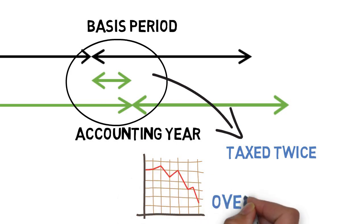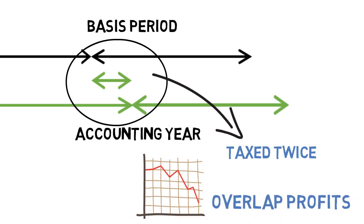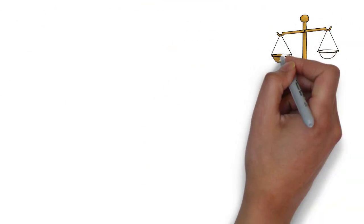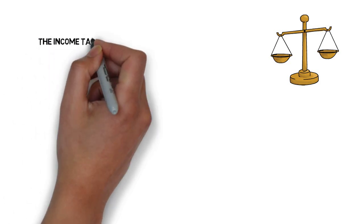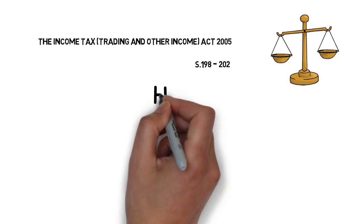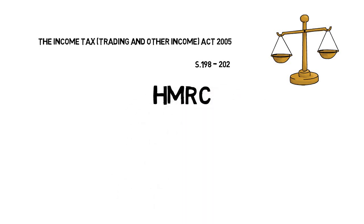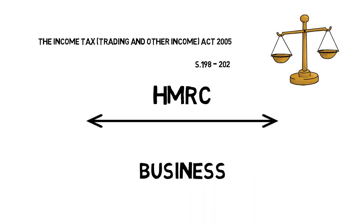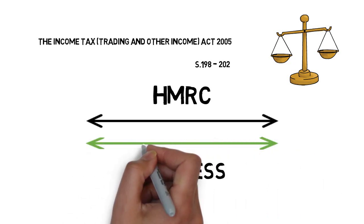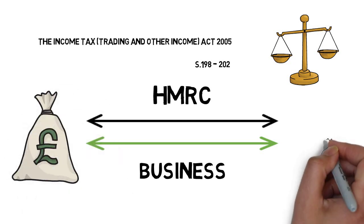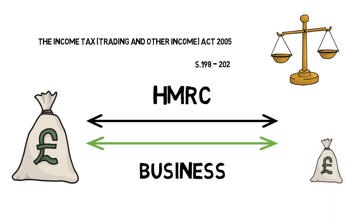These profits that are subject to this double taxation are known as overlap profits. The rules are set out in sections 198 to 202 of the Income Tax Trading and Other Income Act of 2005. They are set so that HMRC claims all the tax they are entitled to over the life of the business, and you only pay the tax you're liable to. Practically speaking, that means you can end up paying more tax in the beginning through overlap profits, but less tax at the end through overlap relief.